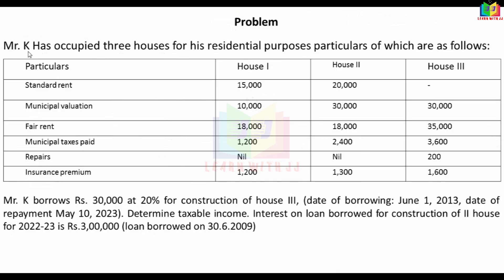Next problem: Mr. K has occupied 3 houses for his residential purpose. We need to calculate the taxable income. Particulars are given for all three houses. When three houses are self-occupied, one is deemed to be let out and two remain self-occupied.